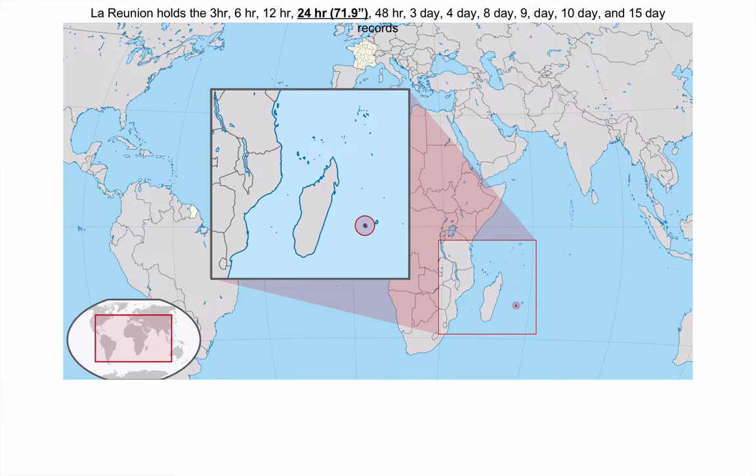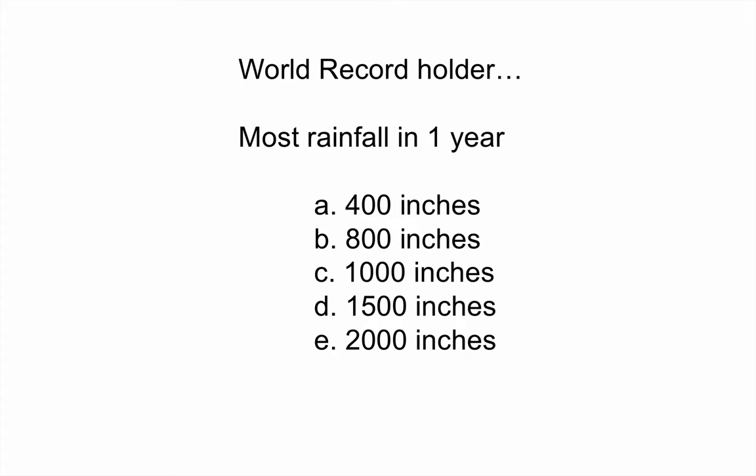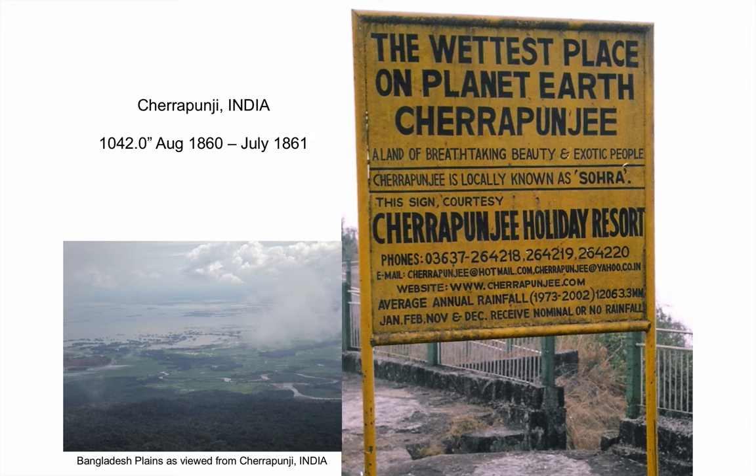What's the world record holder for the most rainfall in a year? 400 inches, 800, 1,000, 1,500, or 2,000? That record was set in the foothills of the Himalayas in Cherrapunji, India, where in one year, August 1860 to July 1861, 1,042 inches of rain fell. For perspective, Champaign's average annual rainfall is 40 inches of rain a year. And you want something crazy? It's driven by the monsoon, so they got that rain basically in three months.